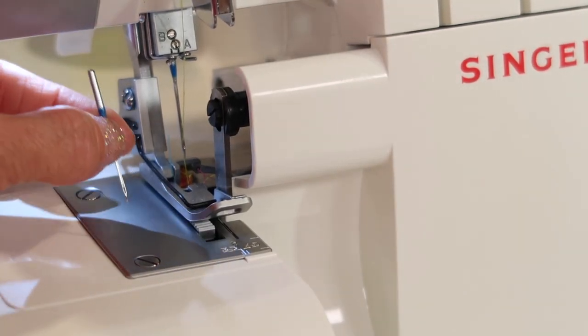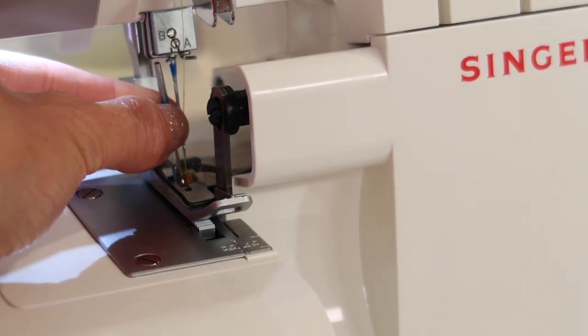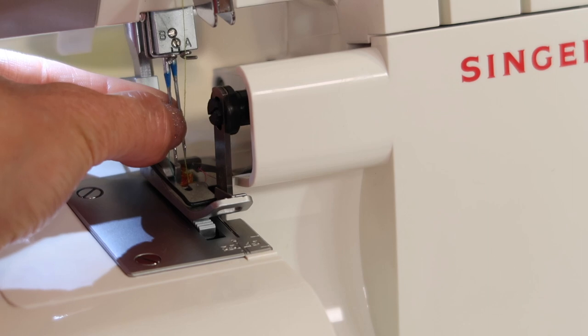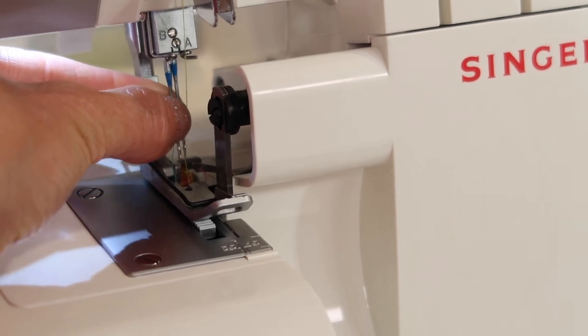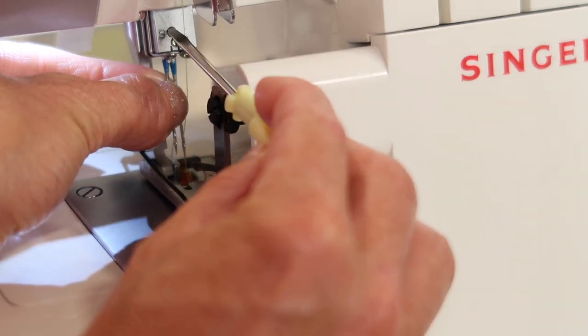To put the needle back in, you'll make sure that the flat side is to the back, and you're going to put it right next to the right needle. Now, make sure you get it all the way up to its highest position. Hold it there, and then tighten that screw.